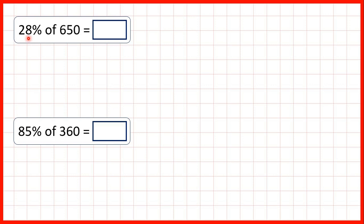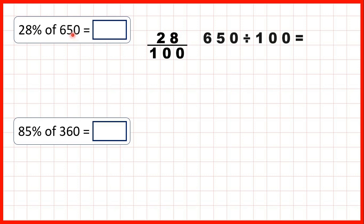Now we need to find a percentage of a number which is not a multiple of 100. First we have 28% of 650. Remember a percentage is a fraction over a hundred, and to find a fraction of a number we can divide by the denominator and then multiply by the numerator. So first we can divide 650 by 100.